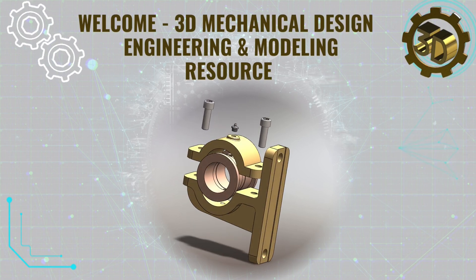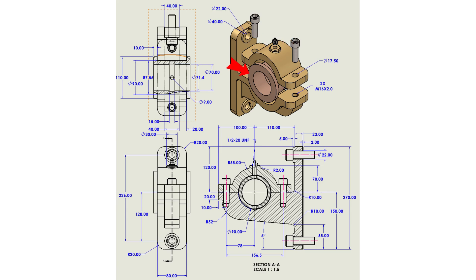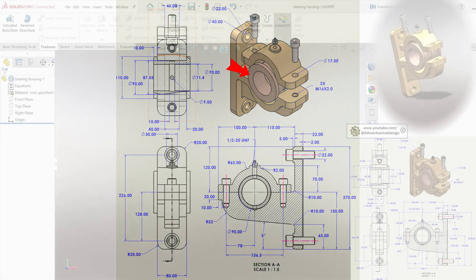Today we'll begin the process of designing a sleeve bearing housing assembly as seen in many industrial applications. The main structure features a robust wall-mountable housing. The assembly is closed with a cover plate engineered with a threaded access hole to accommodate a grease fitting, and secured by two bolts. At the heart of this design is the sleeve bearing itself, specified for an internal diameter of 70 millimeters to ensure reliable rotation and load support.